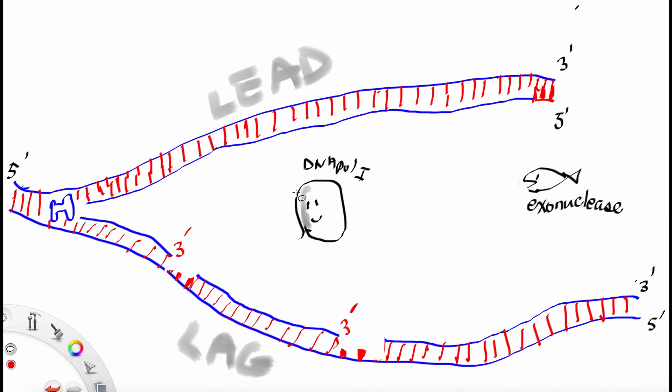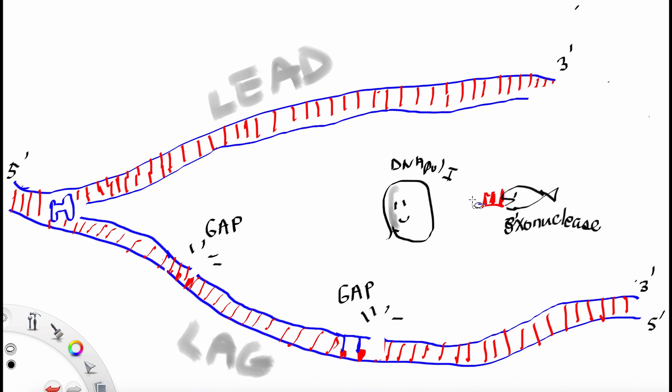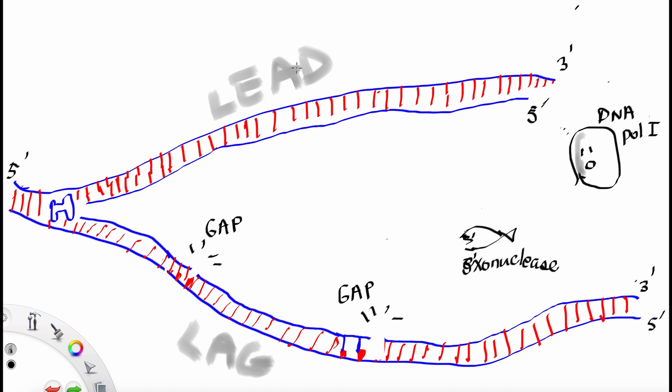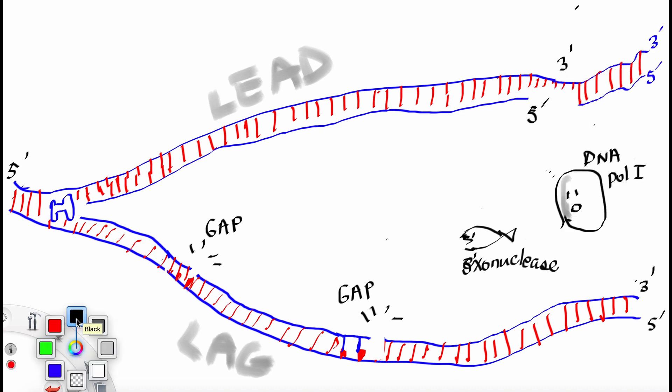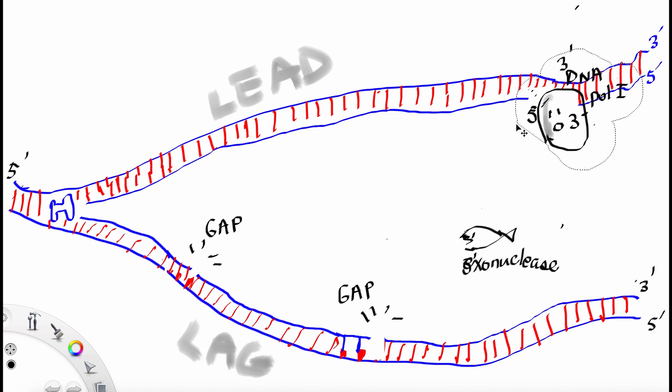DNA polymerase 1 then comes along and fills in where the primers were, replaces the primer with DNA. In fact, exonuclease and DNA polymerase 1, they work together. Exonuclease removes the primers and DNA polymerase 1 fills the gap with DNA.